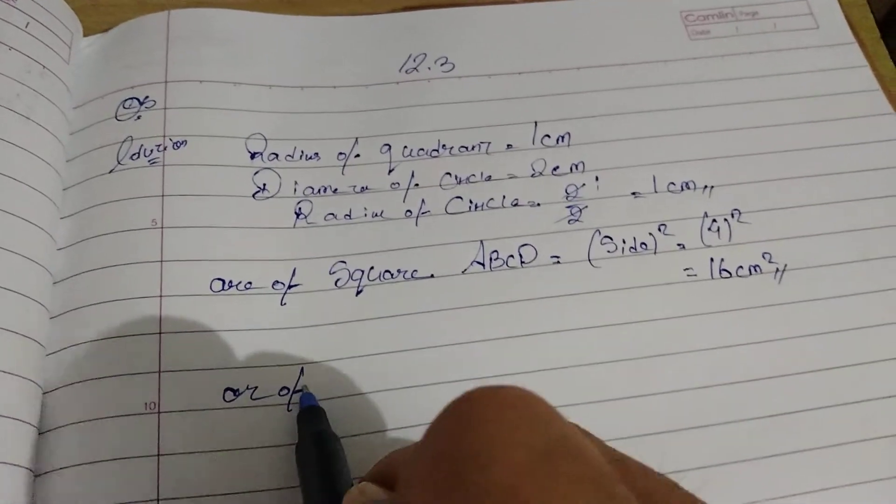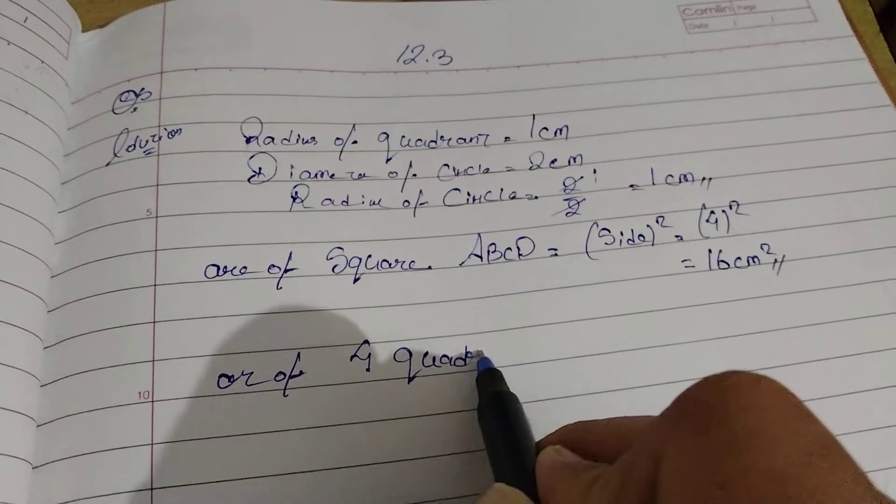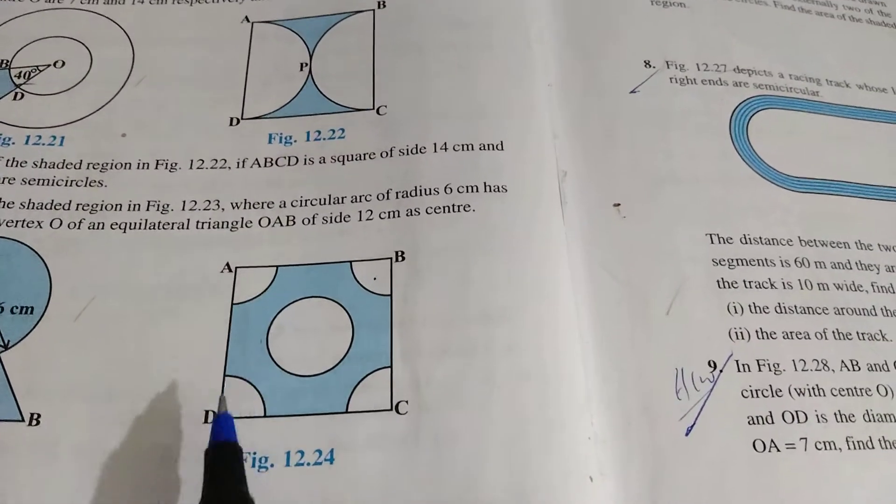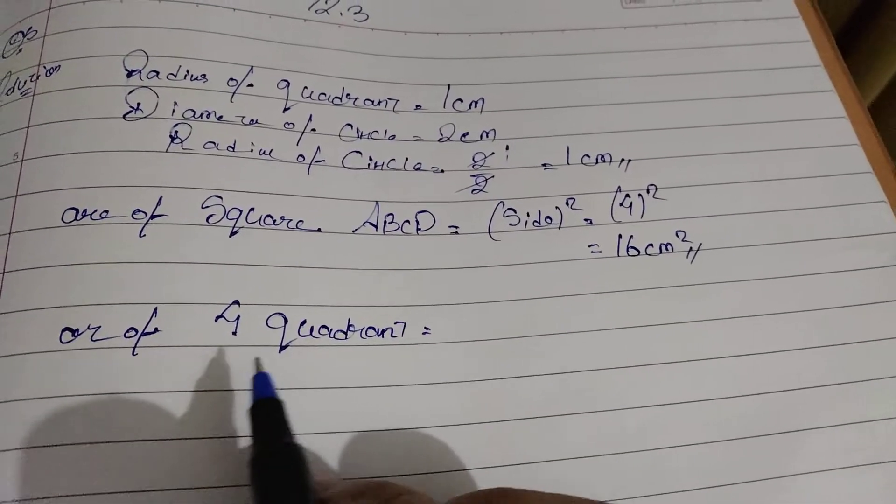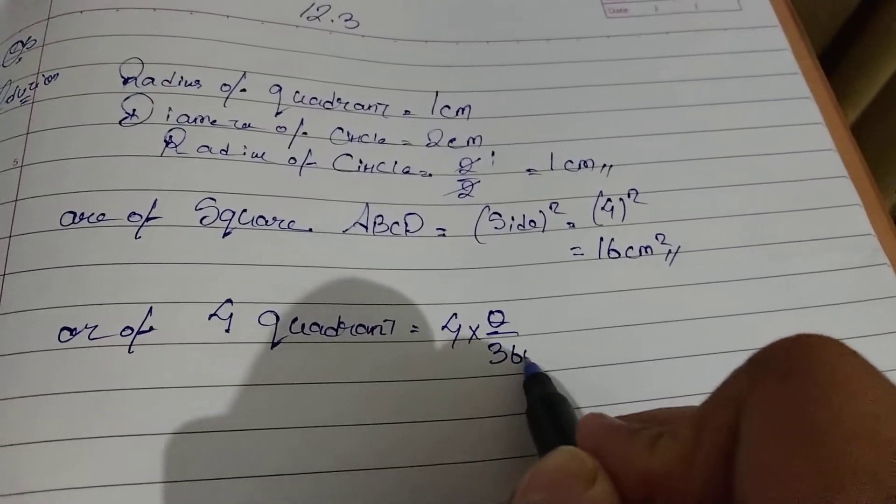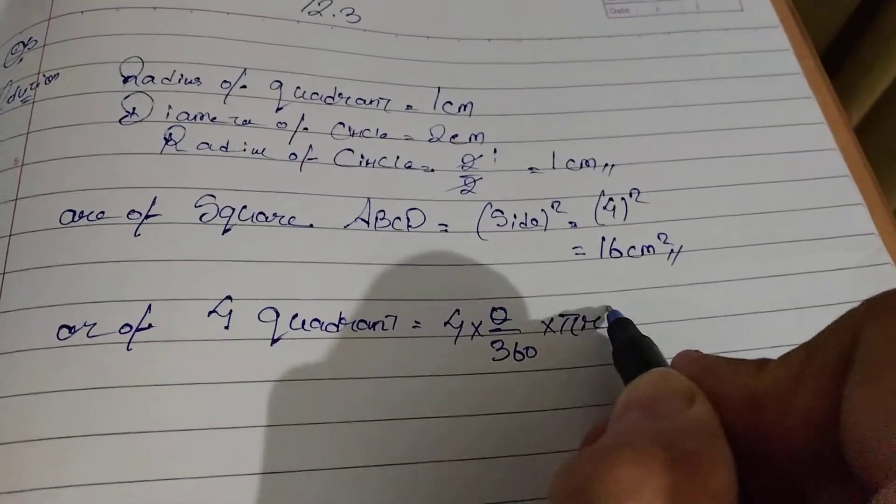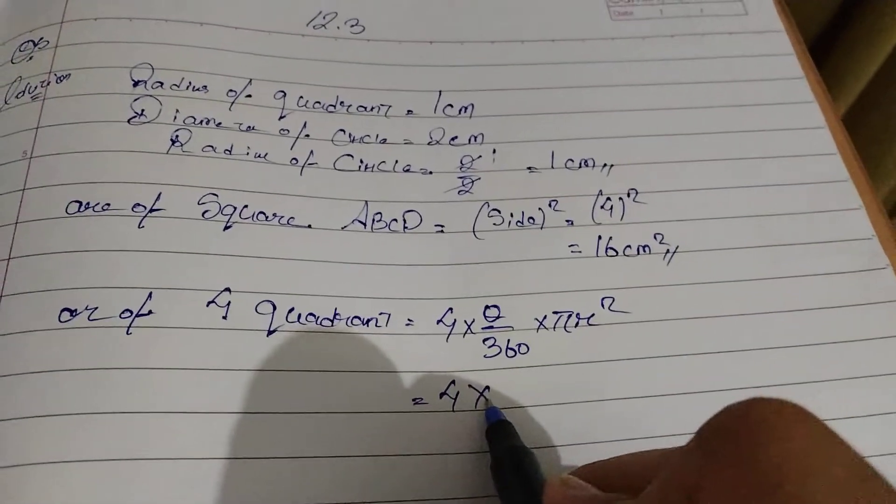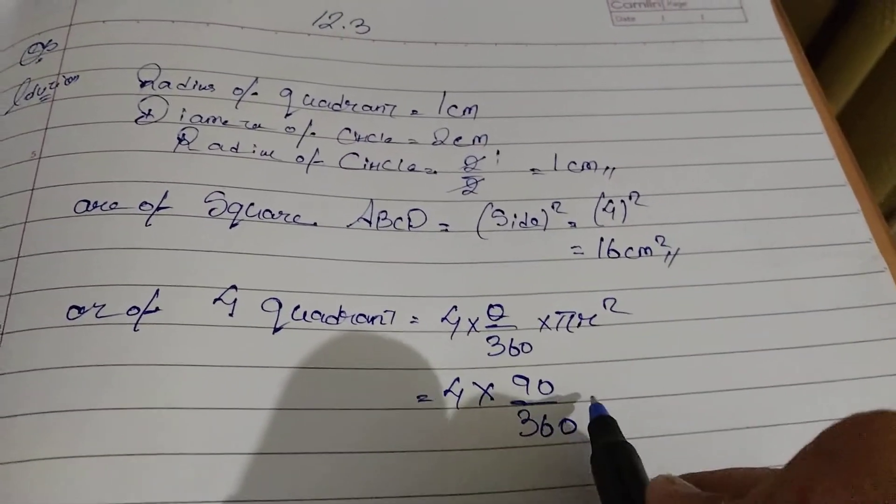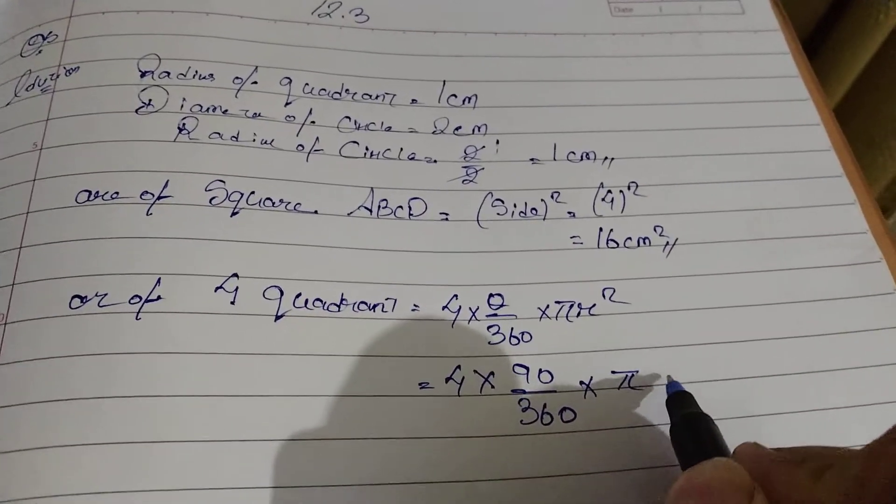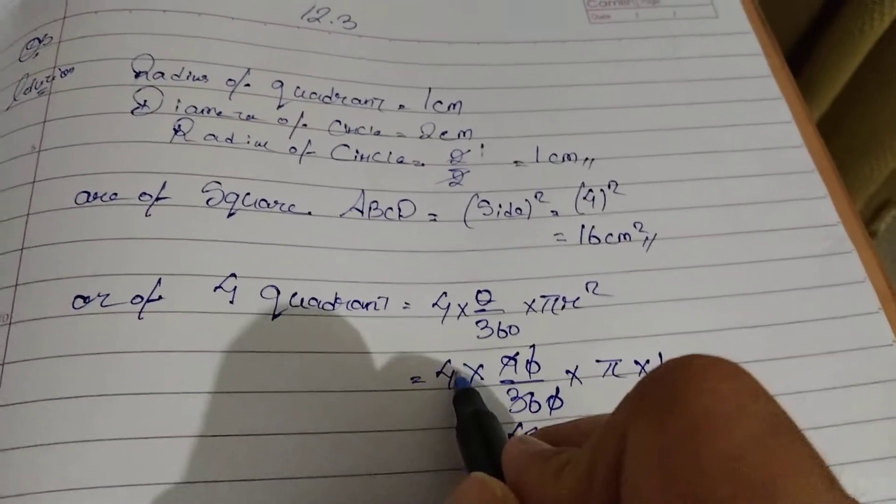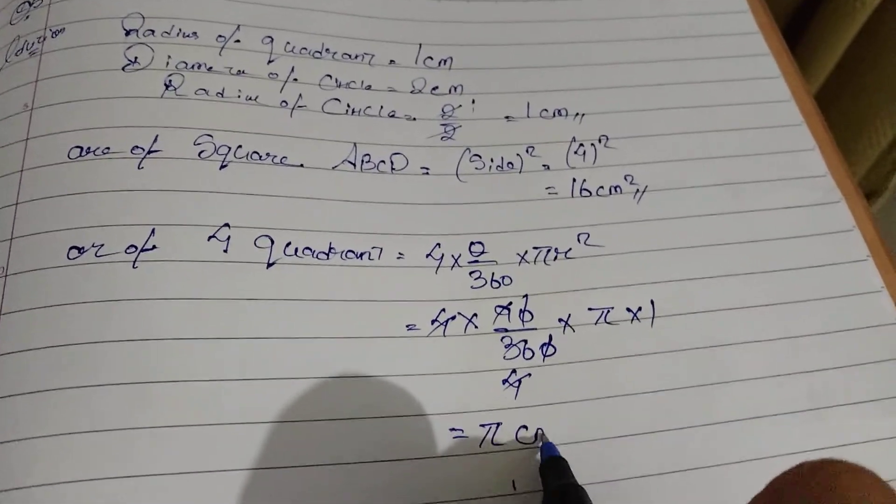Next, area of 4 quadrants. In the figure, there are 4 small quadrants: 1, 2, 3, 4. Area of 4 quadrants equals 4 into theta by 360 into pi r square. So, 4 into 90 degrees by 360 into pi into 1 square. Canceling, we get pi cm square.